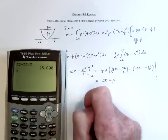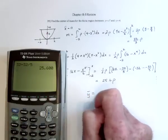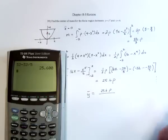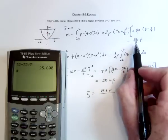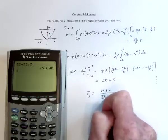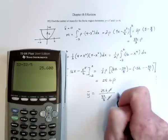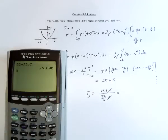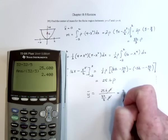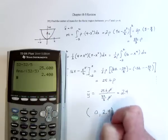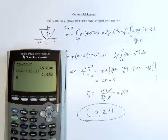Then y bar equals 25.6 times the density divided by 32 thirds times the density. These cancel out, so we've got 25.6 divided by 32 thirds. Sure enough, it's a point just above 2, at 2.4. So finally, the center of mass is at 0, 2.4.